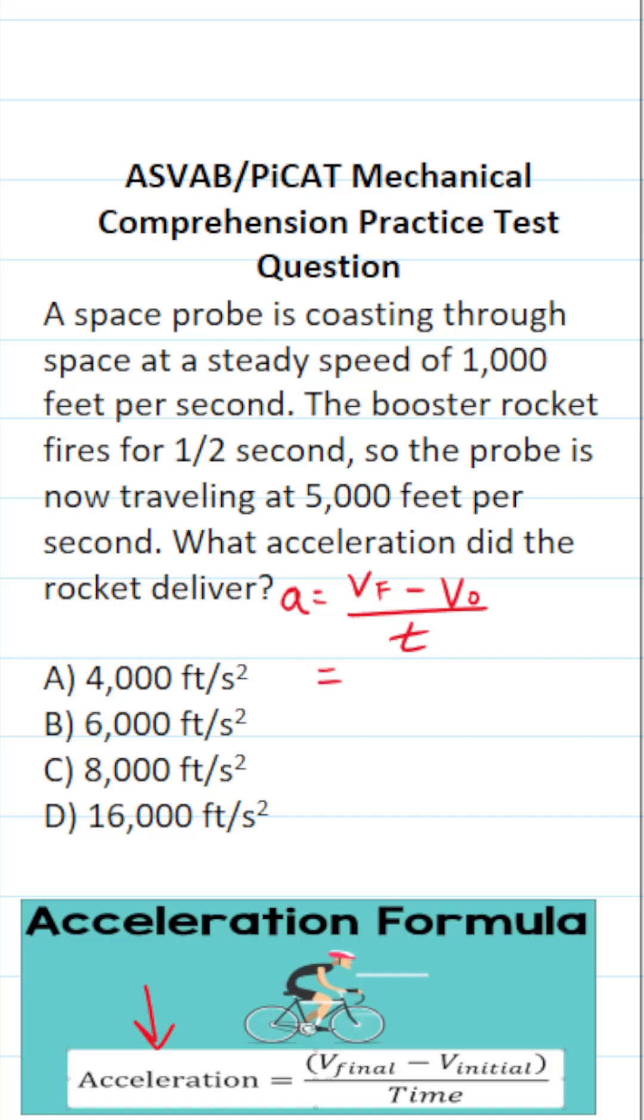In this case, our space probe after the rocket fires is moving at 5,000 feet per second. So this is going to become 5,000 minus its initial velocity. Before the rocket fired it was 1,000 feet per second, so this is going to be minus 1,000. And how long did that rocket fire? Well, it fired for half a second. So this becomes 5,000 minus 1,000, which is 4,000, divided by 1 half.